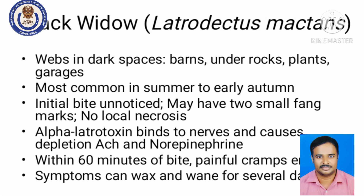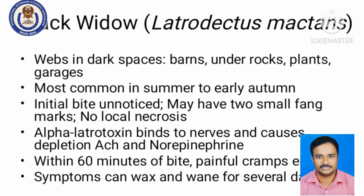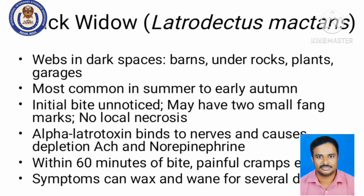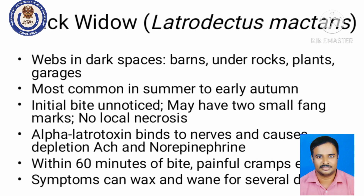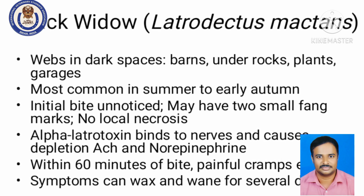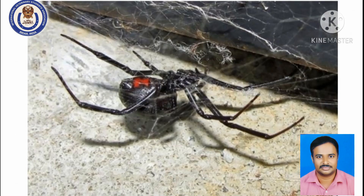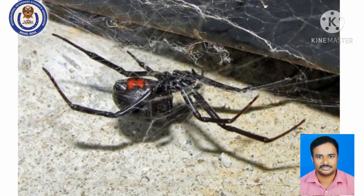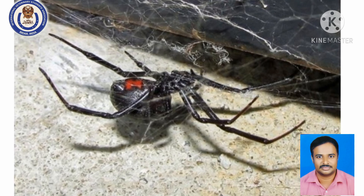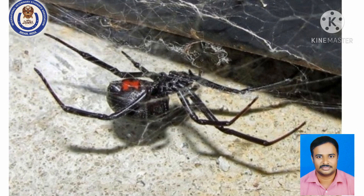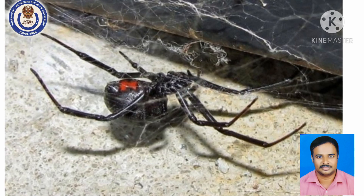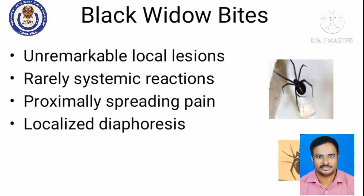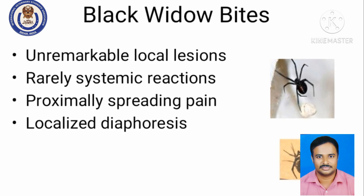The black widow spider, Latrodectus mactans, contains alpha-latrotoxin, which binds to neurons and causes depletion of acetylcholine and norepinephrine. Symptoms can resolve on their own in mild cases, but severe cases can cause toxicity and envenomation. Locally at the bite site it may be unremarkable; rarely systemic reactions can be seen. Localized sweating, called localized diaphoresis, can be observed. Steroids can be used to prevent shock, and locally analgesics or antihistaminics can be used for treatment.